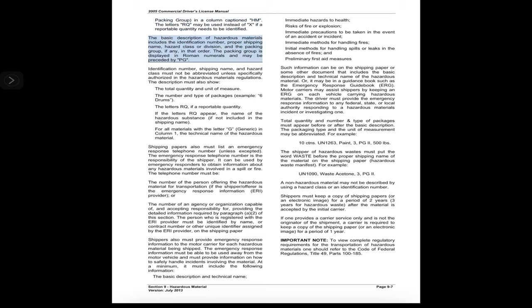The letters RQ may be used instead of X if a reportable quantity needs to be identified. The basic description of hazardous materials includes the identification number, proper shipping name, hazard class or division, and the packing group (if any), in that order. The packing group is displayed in Roman numerals and may be preceded by PG. Identification number, shipping name, and hazard class must not be abbreviated unless specifically authorized in the hazardous materials regulations.